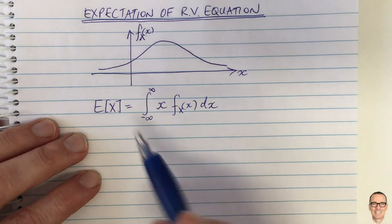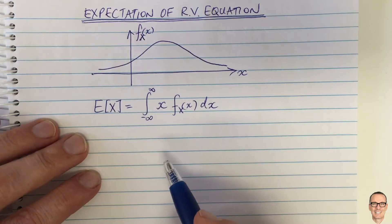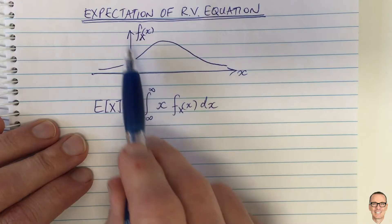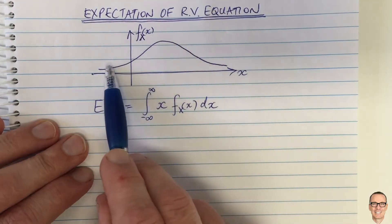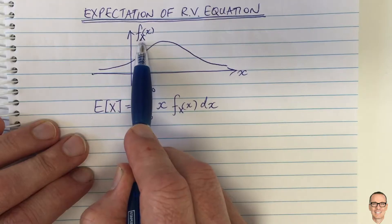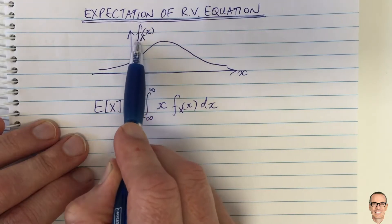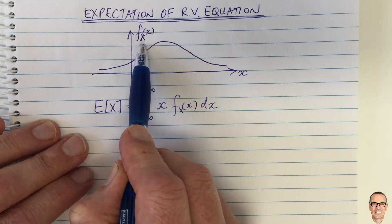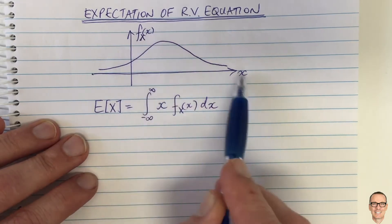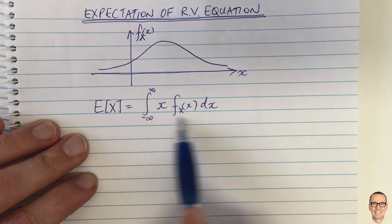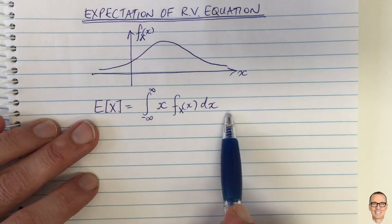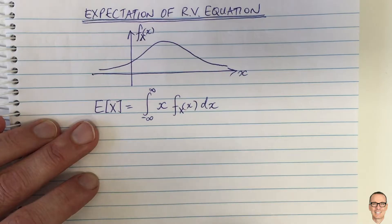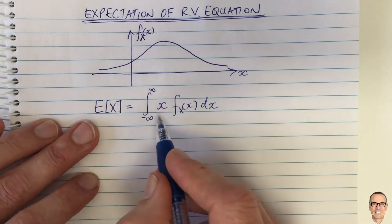Let's take a look at the expectation equation for random variables. Here we've got a typical random variable and this is the probability density function for the random variable capital X. So little f is the probability density function, which is a function of the random variable capital X, and we're plotting this with respect to little x. The equation for the expectation is given here and I want to unpack that equation to understand it a little more and give a physical interpretation.